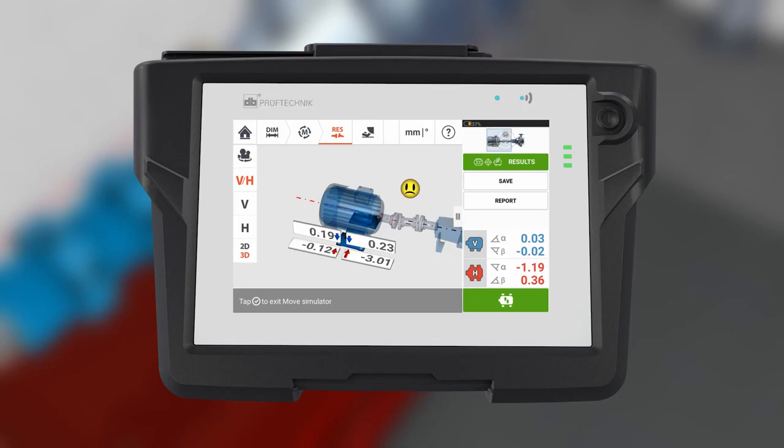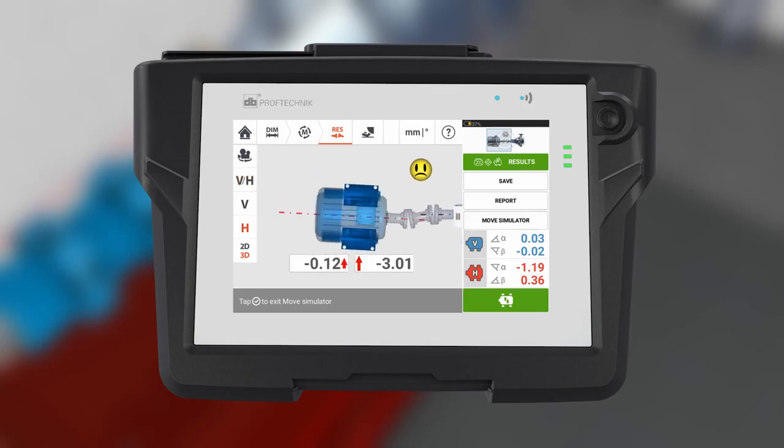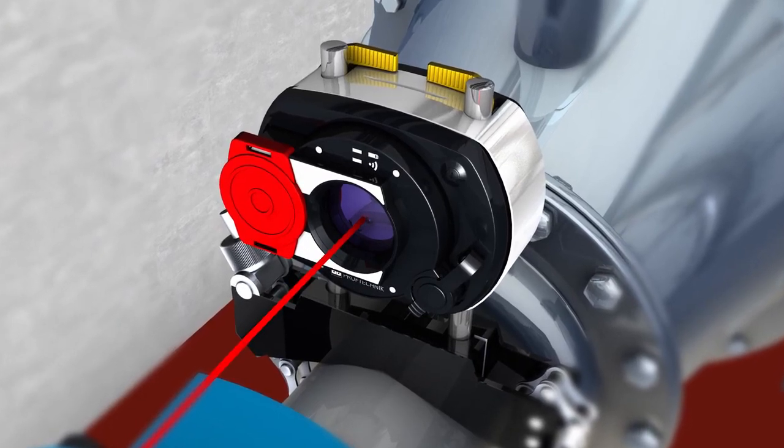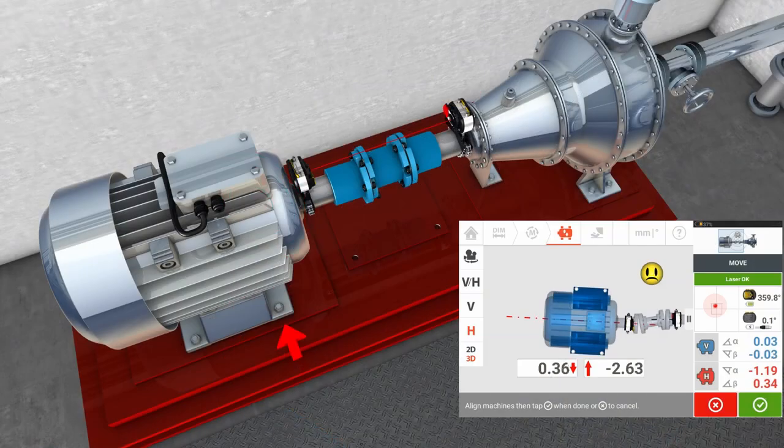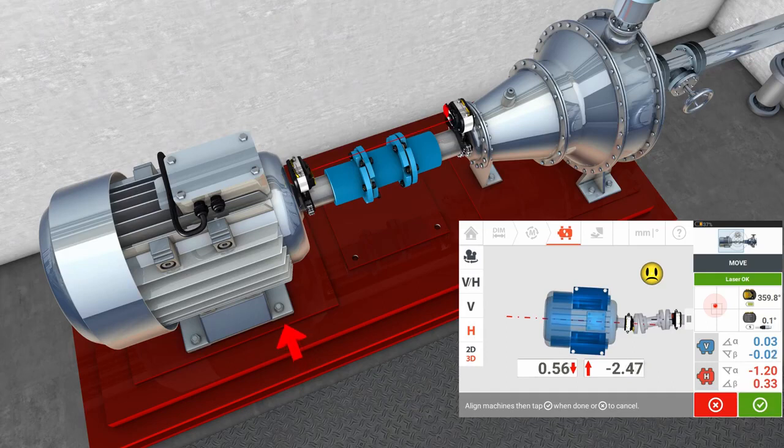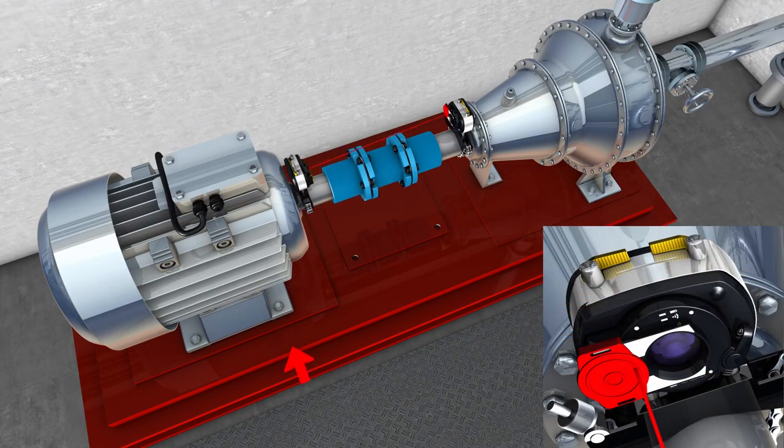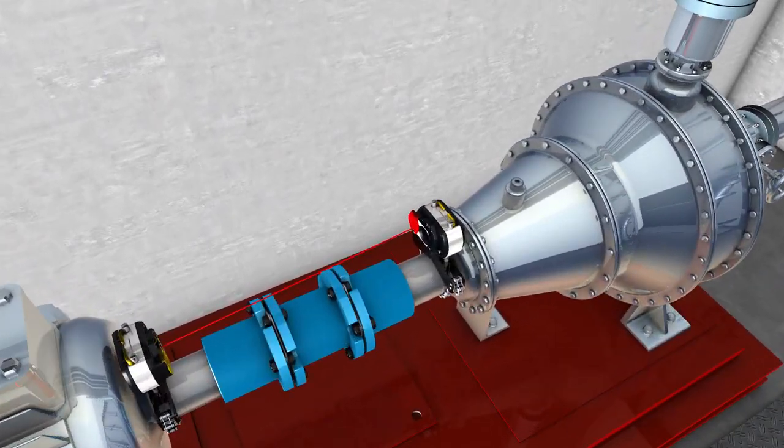Before moving the machine, it is good practice to adjust the laser beam to hit the center of the detector. Now when you move the motor horizontally, the laser beam moves across and out of the detector range. The move procedure has to stop because the sensor no longer receives any data.